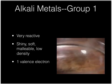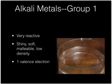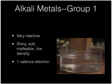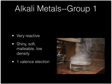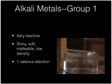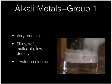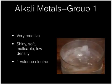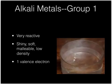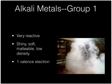The first family we're going to look at is the alkali metals. The alkali metals are very reactive. You can see that they react very strongly with water. They're shiny, soft, and malleable — that means they can be smashed into sheets. They have low density; you can see they float on water when placed on it. And they have one valence electron.